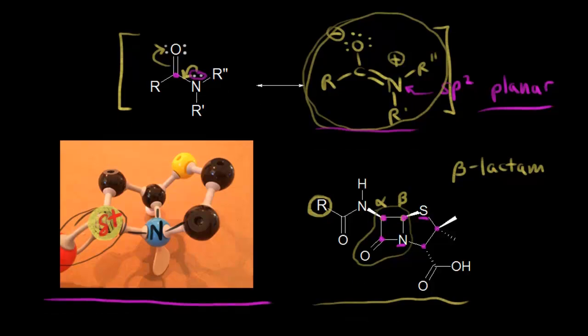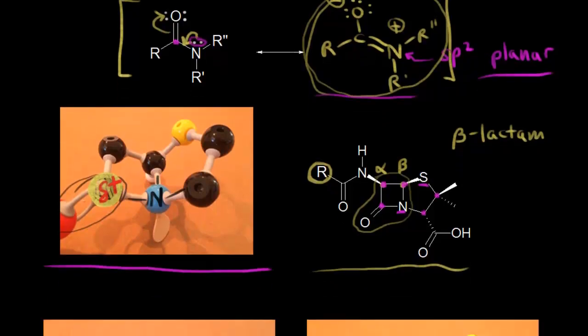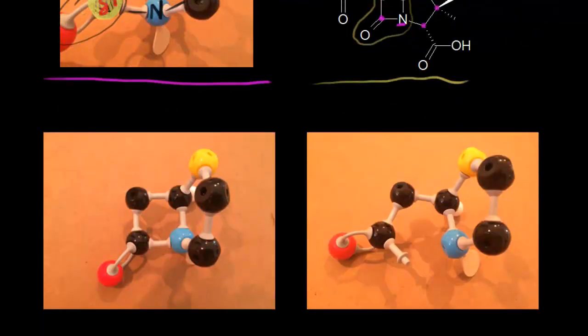Another reason why this beta-lactam can break is due to ring strain or angle strain. Let's take a look at this fused four-five ring system once again. Let me go ahead and use black so we can see what we're talking about here. Here's our beta-lactam. I'm just going to draw it in here. You can see the nitrogen right there in blue. If we think about the hybridization state of this carbon right here, this carbon is bonded to four atoms. It's sp3 hybridized. The ideal bond angle for sp3 hybridized carbon is 109.5 degrees. That's the ideal. We can see that we're far from the ideal in this situation.